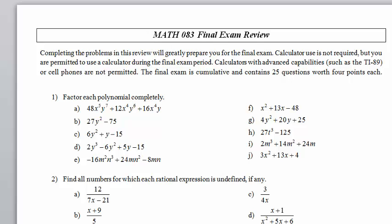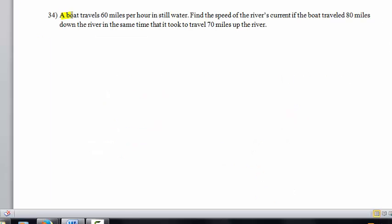Math 083 Final Exam Review Problem 34. A boat travels 60 miles per hour in still water. Find the speed of the river's current if the boat travels 80 miles down the river in the same time that it takes for the boat to travel 70 miles up the river.